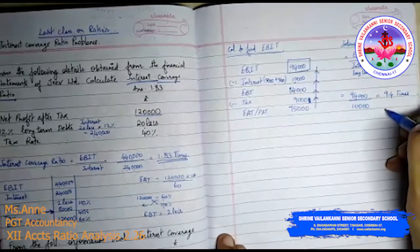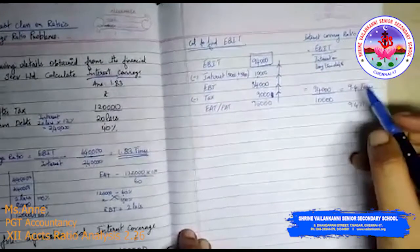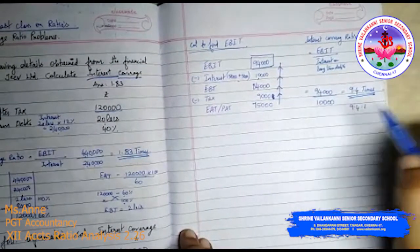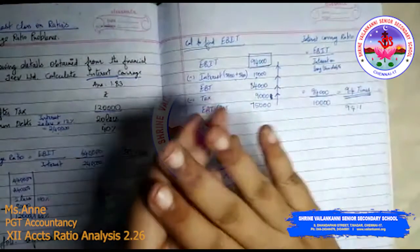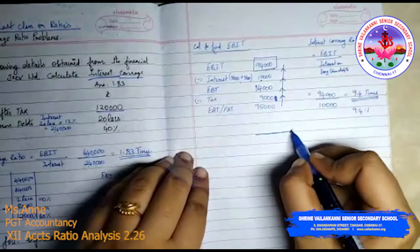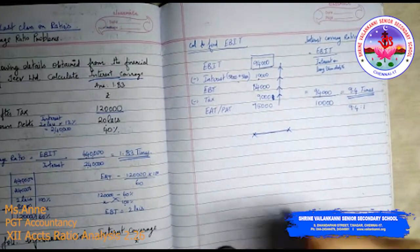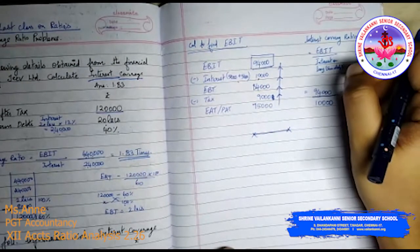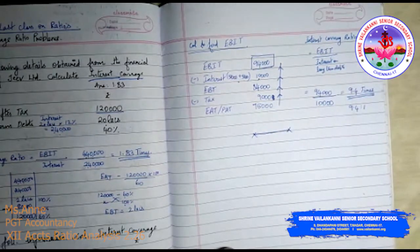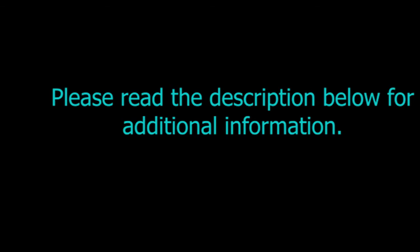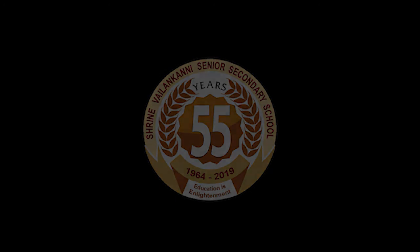You can express it in ratio as well, but the textbook says to express it in terms of times. Make sure that you practice this problem. Give yourself a round of applause — we have completed the ratio chapter! Next chapter will be financial statements, and we will start that fully in the next week after your test. Thank you, class.